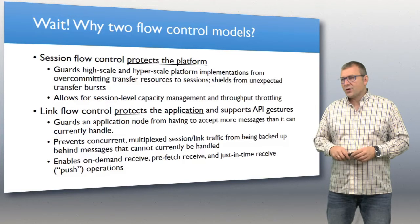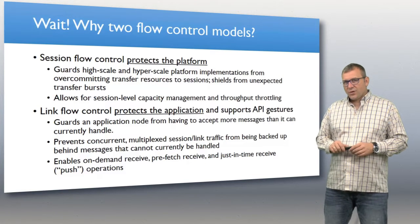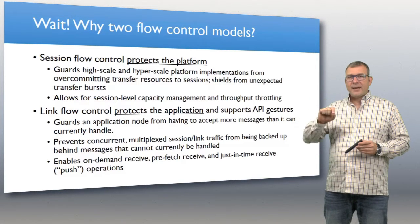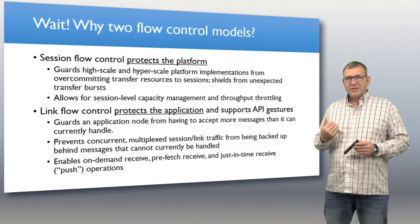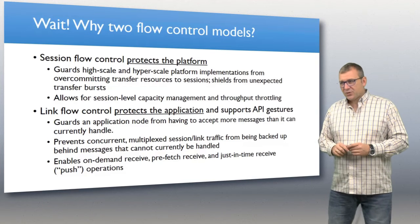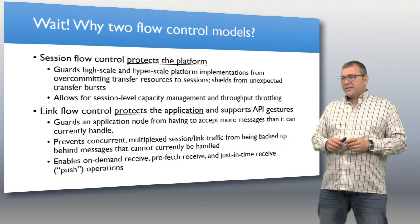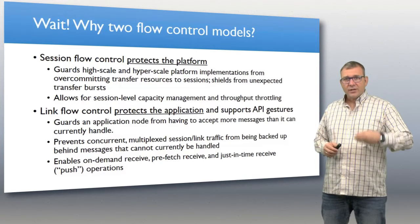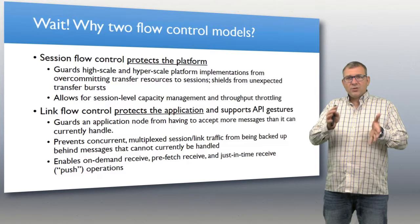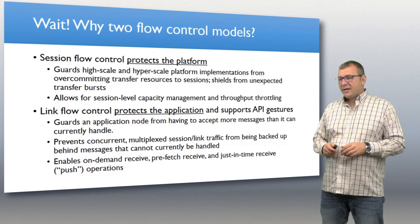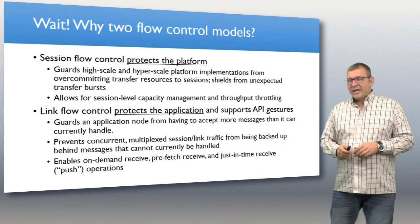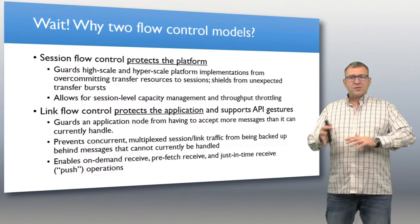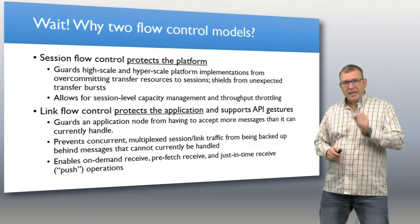That applies equally to small tiny devices and to hyperscale systems dealing with millions of concurrent connections. Link flow control is very different — it happens at the link level and protects the application from receiving too much data, and also specifically supports API gestures. It guards your process from taking more messages than it can currently handle and allows tuning the number of messages to match, for example, the number of threads you have running to handle concurrent messages.